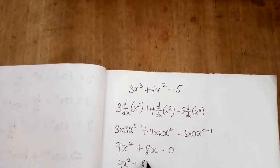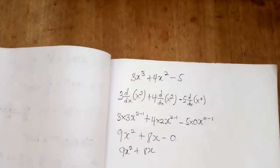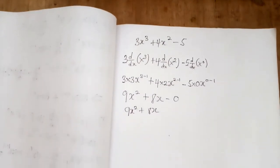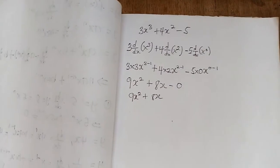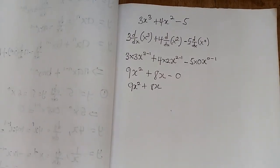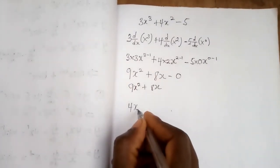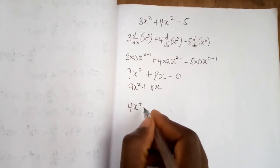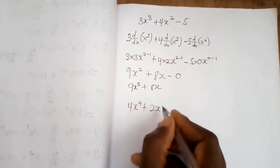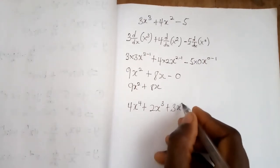Let's take the final example. We have y = 4x⁴ + 2x³ + 3x² + 5x. We apply the same principle: for each term, the constant coefficients stay and we find the derivative of each power of x.